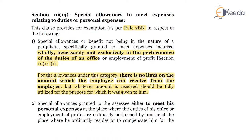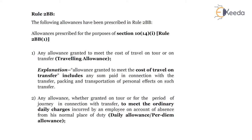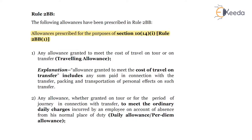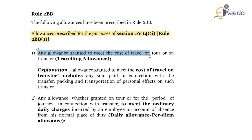We have discussed section 10(14)(1) and 10(14)(2). Now we will discuss the examples of allowances mentioned under the provisions. First we will consider 10(14)(1), which are prescribed under rule 2BB. Allowances are prescribed for the purpose of section 10(14)(1) which are mentioned in rule 2BB(1). First: any allowance granted to meet the cost of travel on tour or on transfer.